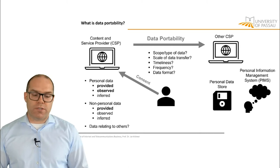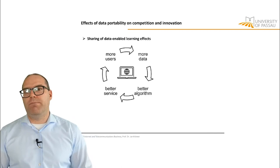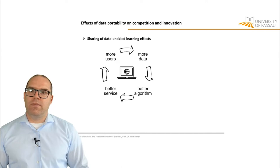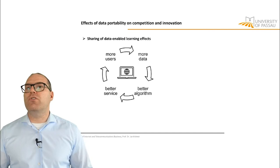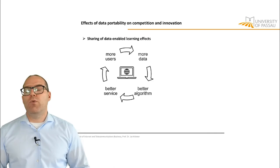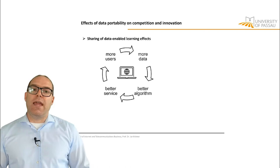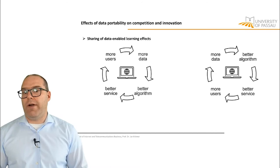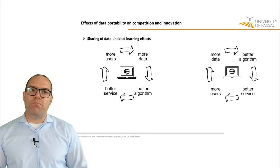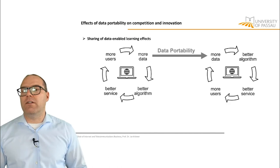Now, what are some of the effects of data portability on competition? I want to highlight two main effects. First, through data portability, data-enabled learning effects can be enabled at other parties. It is commonly understood that in digital markets there is a virtuous cycle where more data allows you to devise better algorithms, which means you can have a better service, which attracts more users, which gives you more data. That cycle can also constitute entry barriers and limit competition. Another content and service provider with a smaller user base would have less data, a worse algorithm, a worse service, and will struggle to compete. With data portability, data can be shared and that virtuous cycle can also be driven at another content and service provider.